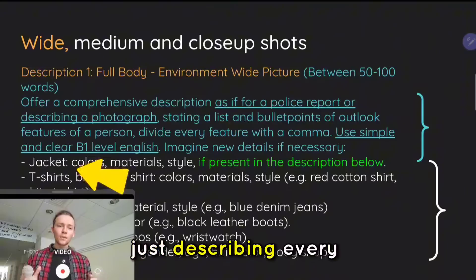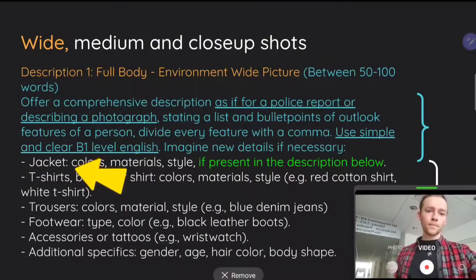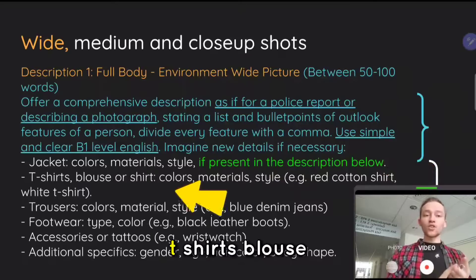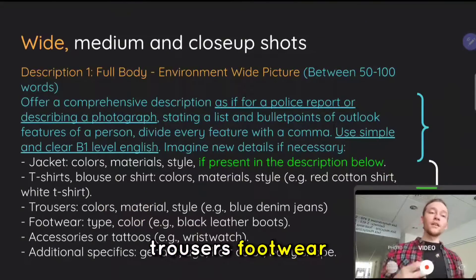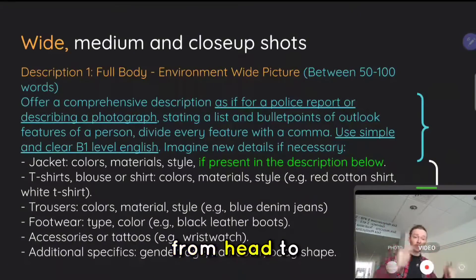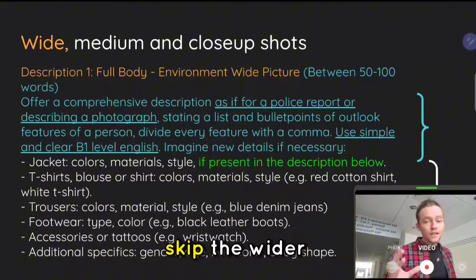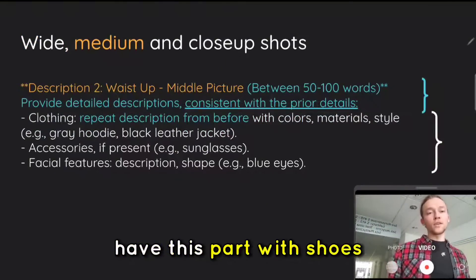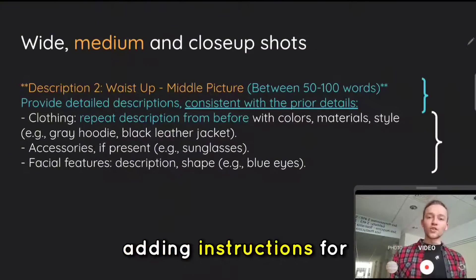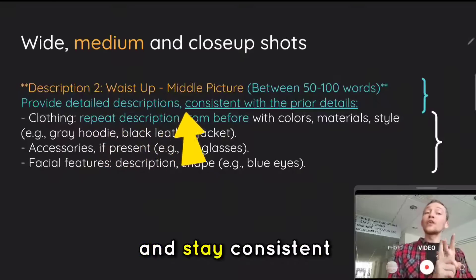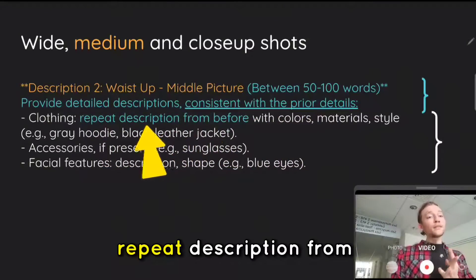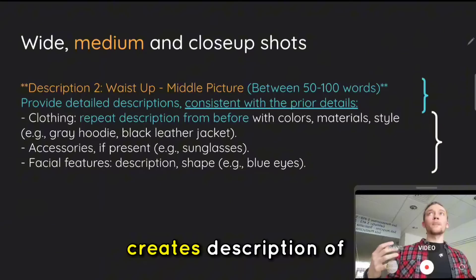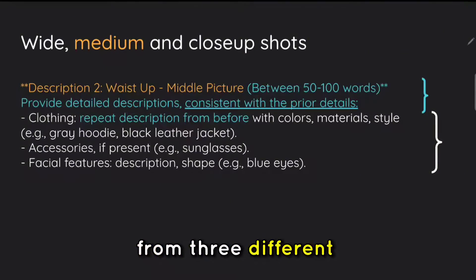The next part is describing every single thing about the character. For example, we tell it to describe a jacket if present, T-shirts, blouse, jacket, colors, trousers, footwear. This way ChatGPT has to describe all parts of the person from head to toes — it can't skip anything. This is very important because for the medium shot we'll be creating, it doesn't have this part. We slowly start adding instructions for ChatGPT: provide detailed descriptions and stay consistent with the prior details, repeat description from before. This way ChatGPT doesn't create three different descriptions, but actually creates a description of one person from three different shot styles.